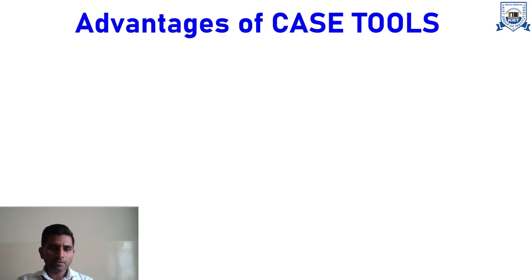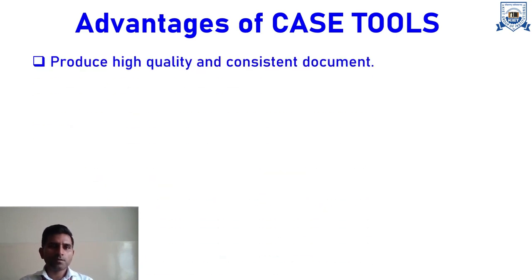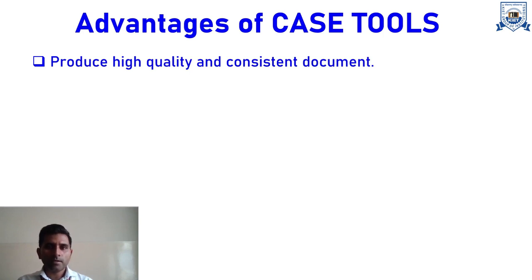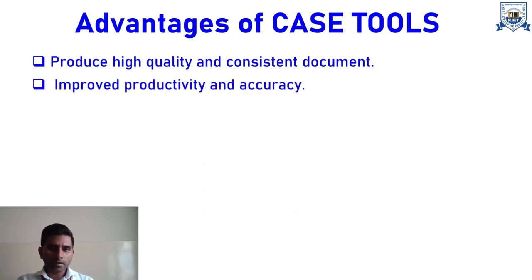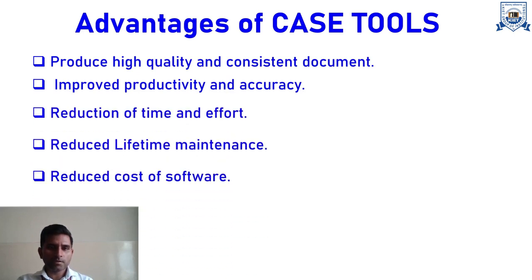Now, what are the advantages of CASE tools? The first major advantage is that they produce high-quality and consistent documentation. If you are using automatic tools across a variety of phases, your software will be of high quality, whereas manual tasks may introduce human errors. Additional advantages include improved productivity and accuracy, reduction of time and effort, reduced lifetime maintenance, and reduced cost of software.